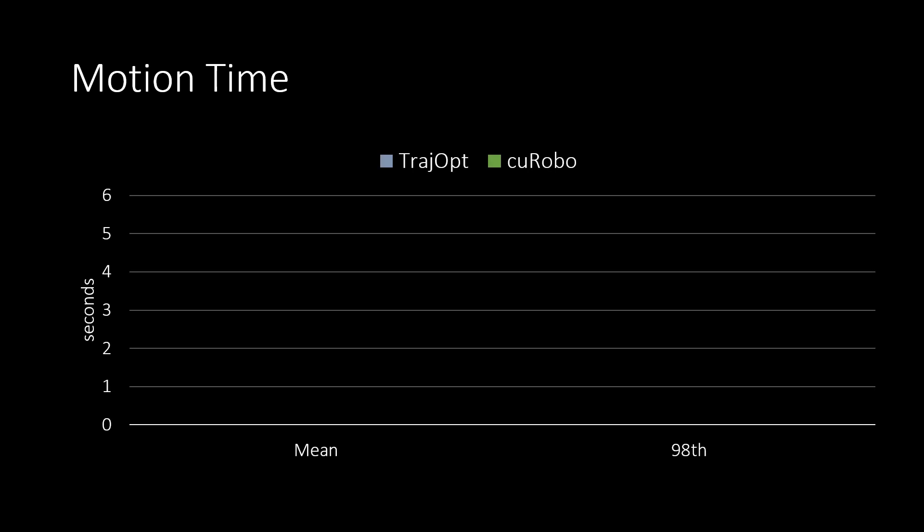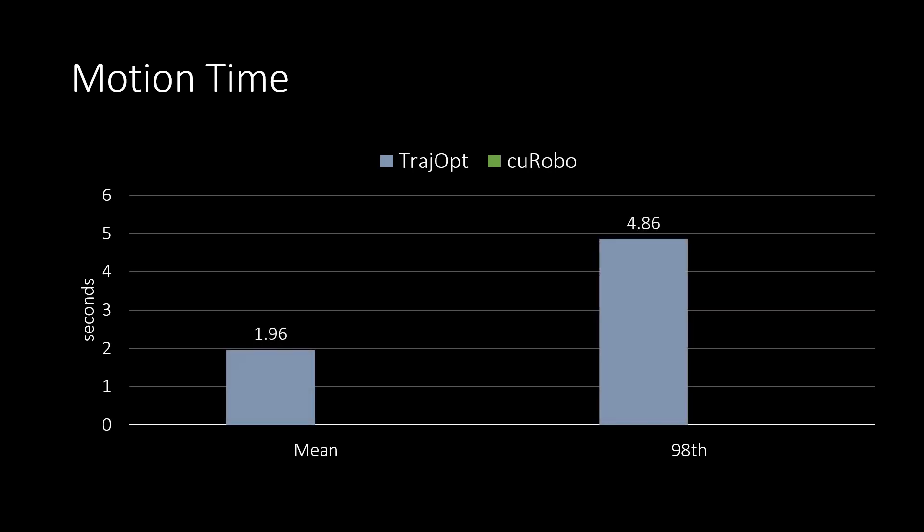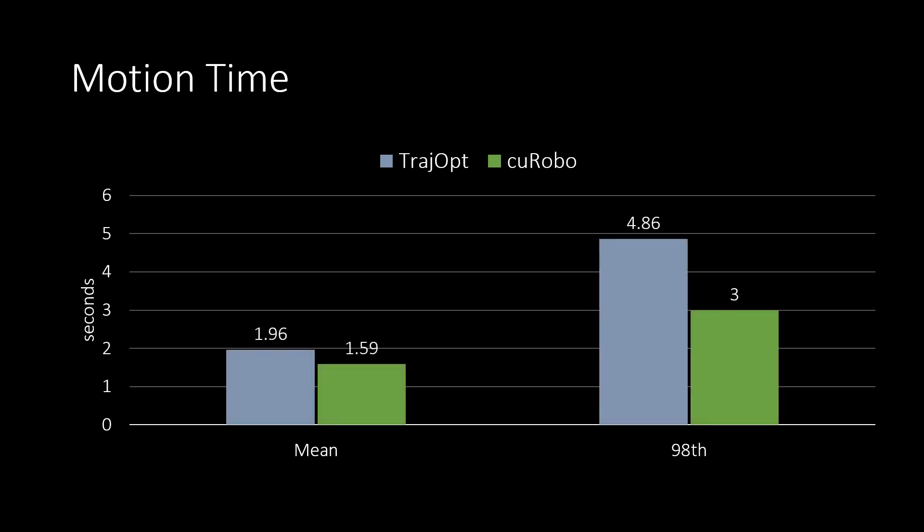In addition to the path lengths being shorter with Kurobo, the generated motions are also shorter in time, as seen by the lower trajectory time in mean and 98th percentile here when compared to TrajOpt. Kurobo generated trajectories can reach a goal 1.6 times faster than a trajectory generated with TrajOpt on the 98th percentile.